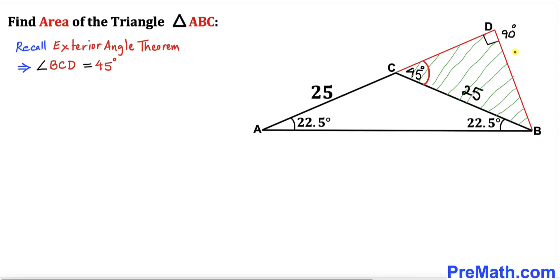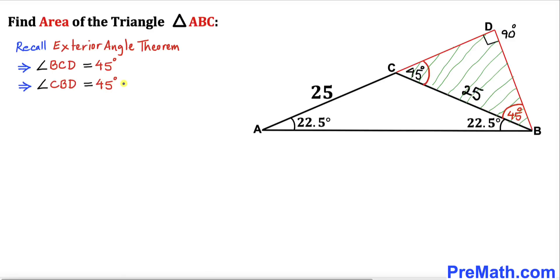Now let's focus on right triangle BCD. We know angle BCD is 45 degrees and angle CDB is 90 degrees. Since the sum of angles in any triangle is 180 degrees, angle CBD must be 45 degrees as well.